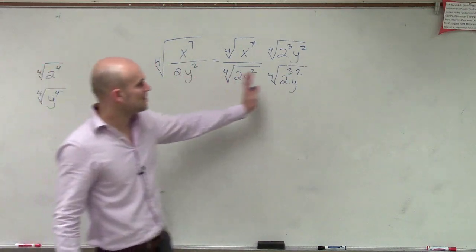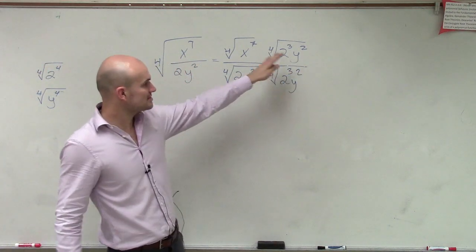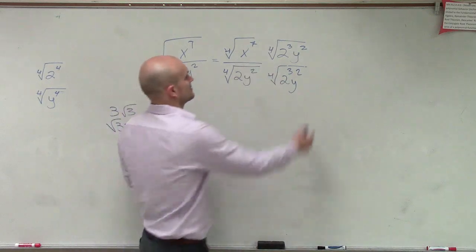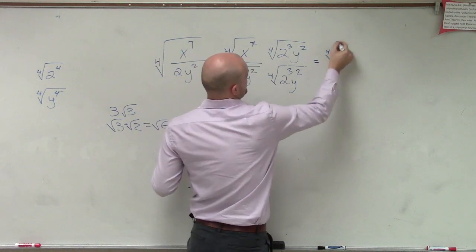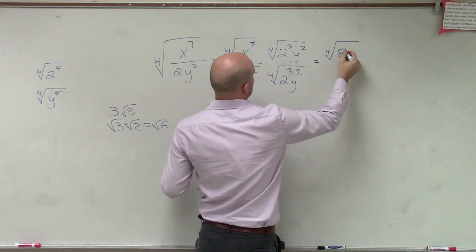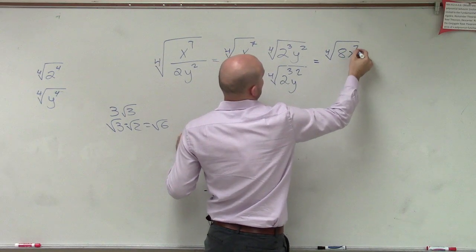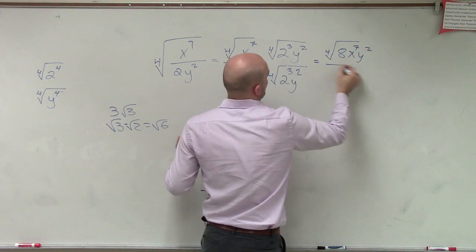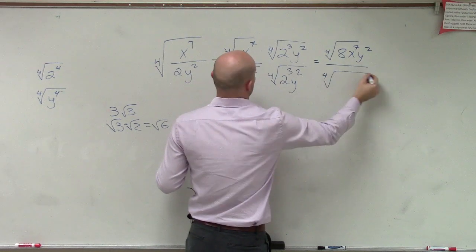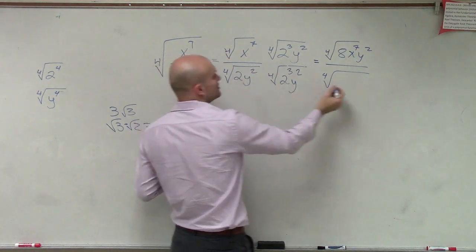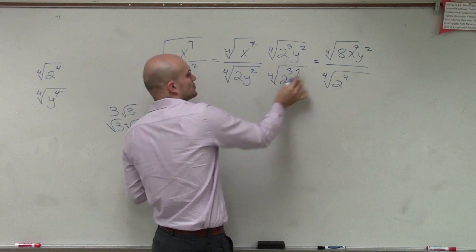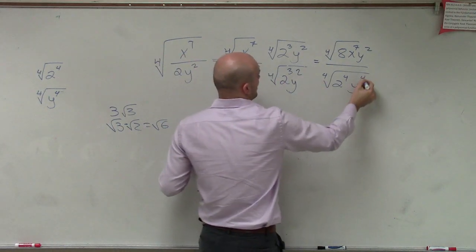So now, when I multiply across, this looks kind of crazy. 2 cubed is 8. So this becomes the fourth root of 8 x to the seventh y squared, all over the fourth root of now 2 cubed times 2 is 2 to the fourth. 2 squared times 2 squared is y to the fourth.